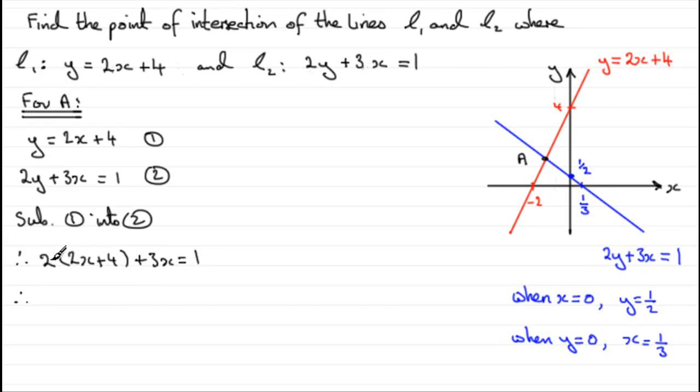So we just need to expand the bracket, so we've got 4x plus 8, and then the plus 3x equals 1. Group together the x's, so we end up with 7x, and subtract 8 from both sides. So 1 take away 8 is minus 7, and if we divide both sides by 7, we end up with x equaling minus 7 divided by 7, which is minus 1.